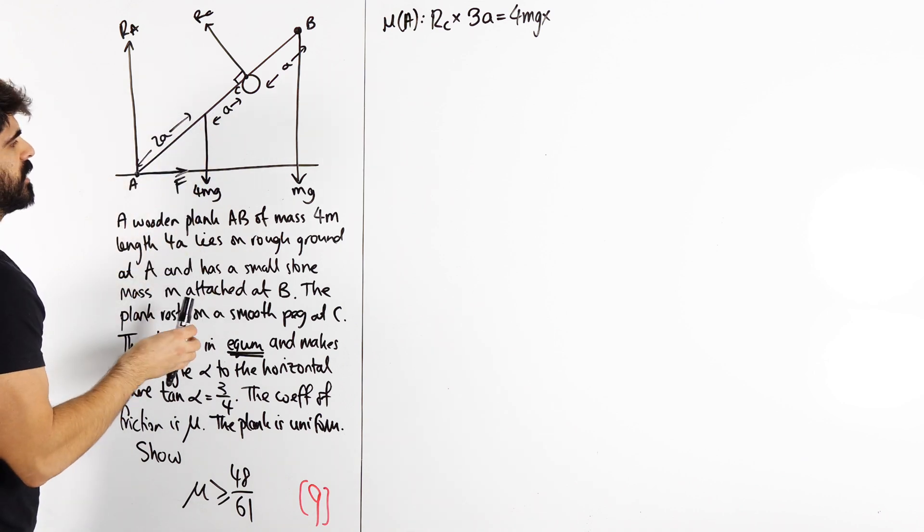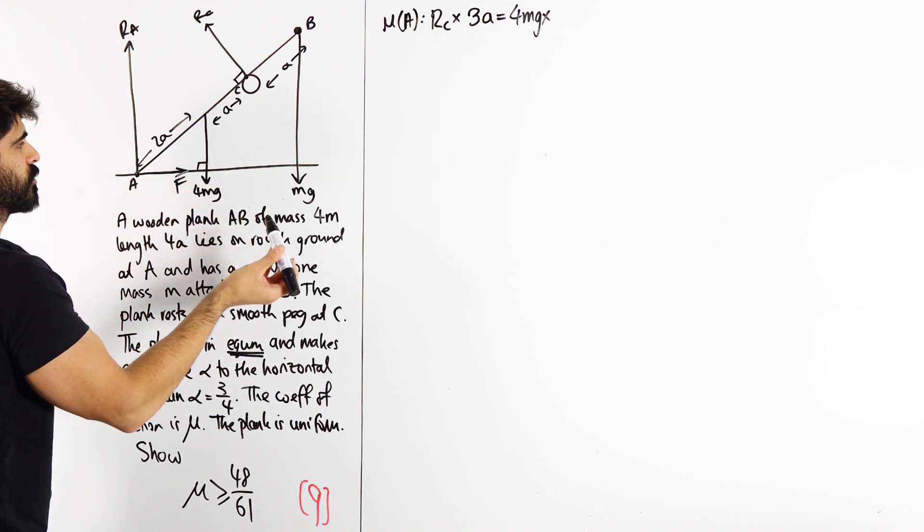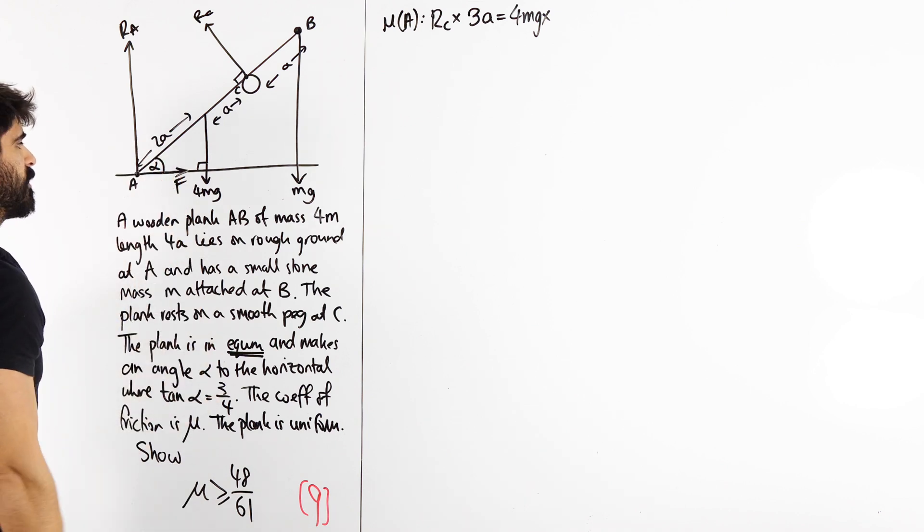Equals 4MG times its shortest distance from A. Now 4MG is vertical, so its shortest distance is horizontal. So what is that distance? Well, it's a right angle triangle, simple SOHCAHTOA. The hypotenuse, cos. Now remember they told us in the question, this was alpha, right? So cos alpha, they said that the angle alpha to the horizontal, so 2A cos alpha.